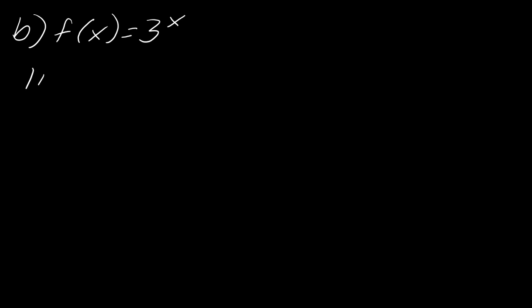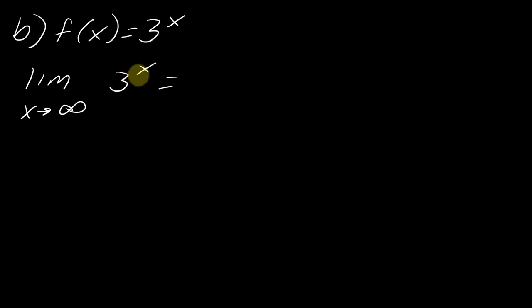Now let's pivot to the next example. Think about the limit as x approaches positive infinity of 3 to the x. Just think about what happens as you put larger and larger numbers in — 3 squared, 3 cubed, 3 to the 27th — it's just going to get really, really big. So as x goes to positive infinity, this function doesn't have an asymptote on that side; it just keeps getting infinitely large. This particular function goes to infinity.